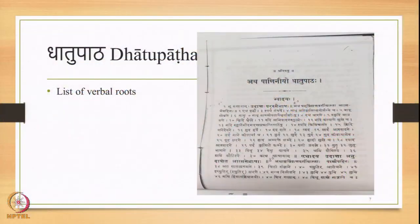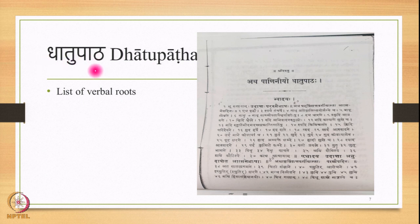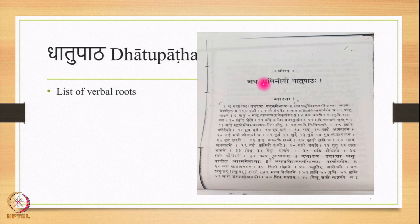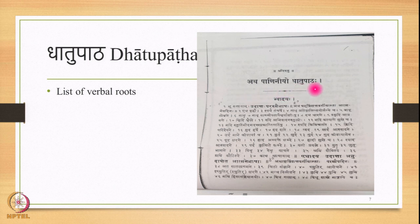Here is an important list or lexicon called Dhatu Patha. This is a list of verbal roots. Dhatu is a verbal root; Patha is the list. On this slide, there is a screenshot of the first page of the book referred to in this course. This page displays the Dhatu Patha as ascribed to Panini — Atha Paniniyo Dhatu Pathaha — and here is a list of 48 verbal roots appearing on this particular page.